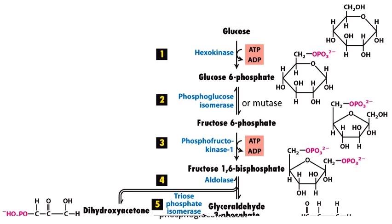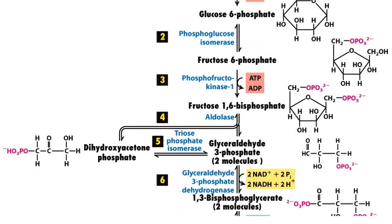In step number 2, the glucose 6-phosphate gets converted into its isomer, that is fructose 6-phosphate, by the action of another enzyme called phosphoglucomutase. In step number 3, another phosphate group gets transferred from ATP to fructose 6-phosphate. This will produce fructose 1,6-biphosphate under the influence of another enzyme called phosphofructokinase.